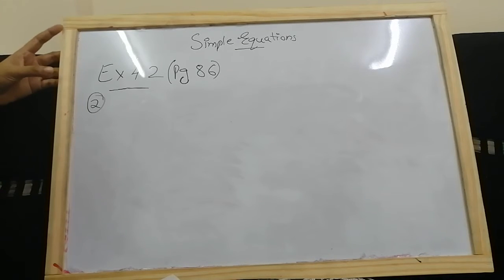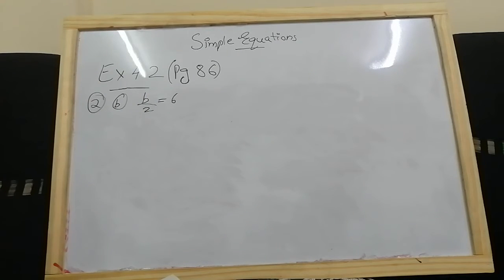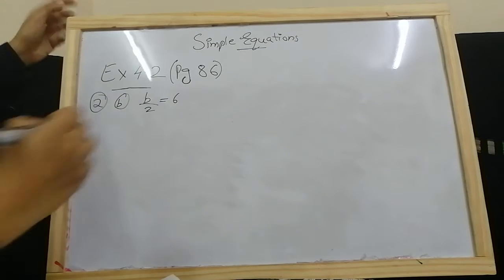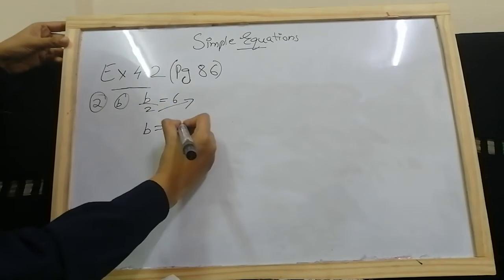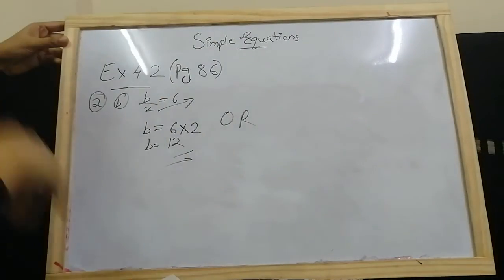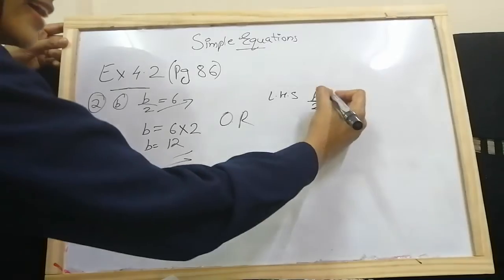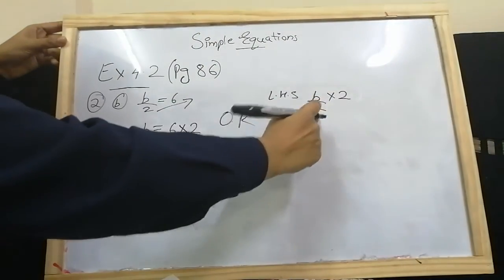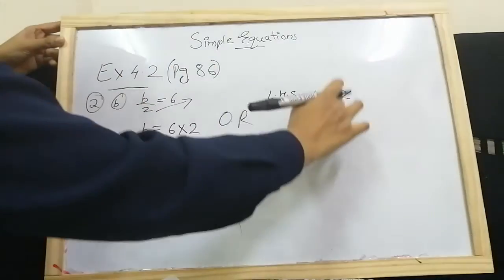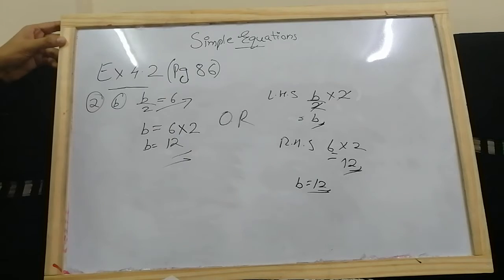Sub-question b: b divided by 2 equals 6. Here it is division, so when we take the number after equals it becomes multiplication: b equals 6 multiplied by 2, so b equals 12. Using the other method: LHS is b by 2 — since it's division, multiply both sides by 2. LHS gives b; RHS gives 6 times 2 equals 12. So b equals 12.